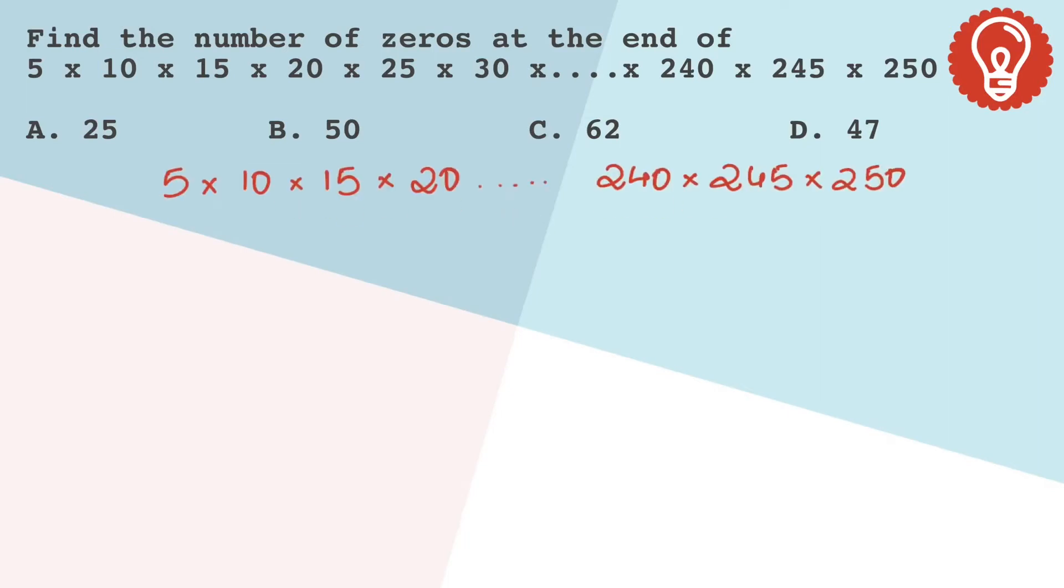We are given a product where I can write 5 as 5 × 1, 10 as 5 × 2, 15 as 5 × 3, and so on till 5 × 50. Now let's take every two numbers as one set.